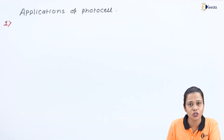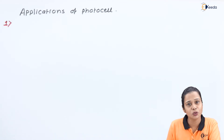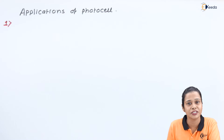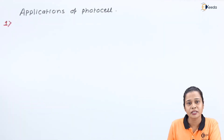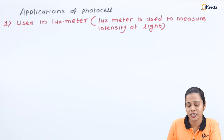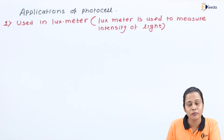Let us see the applications of the photocell. The working of the photocell is based on the principle of the photoelectric effect — when light of suitable frequency is incident on the metal plate, there is an emission of photoelectrons and current flows through the circuit, converting light energy into electrical energy. The first application is the luxmeter, a device used to measure the intensity of light. When intensity is more, there is more photoelectric current, and in that way we can find out the intensity of light.